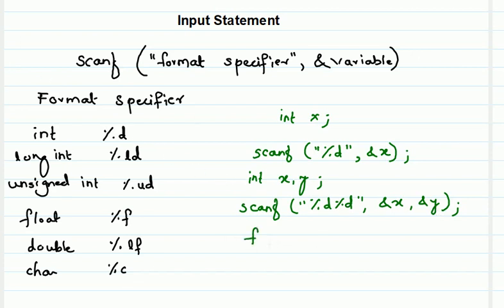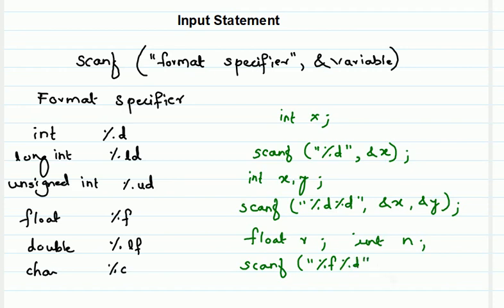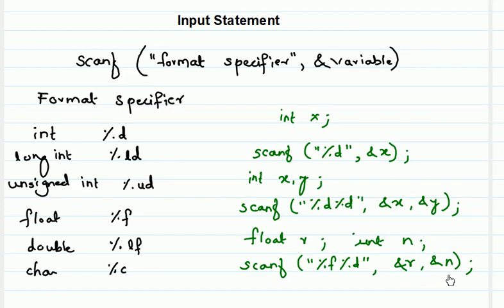If you have variables of different types — say float r and int n — you can also write it in a single scanf statement. For example, if you want to scan the float value first and then the integer: scanf("%f %d", &r, &n). You must follow the order: the format specifier for float appears first and integer second, so the variable order must match — float variable r first, then integer variable n. Remember to follow this order.